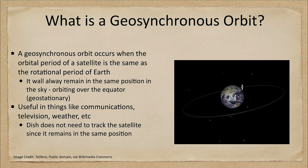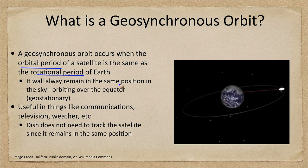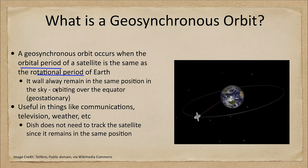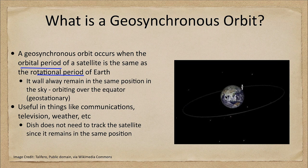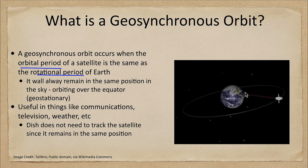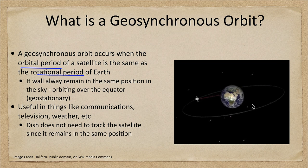This occurs when the orbital period of a satellite is the same as the rotational period of Earth. What that means is that it always keeps over the same spot on Earth. You can see the red line here as it goes through — it's staying over this exact same point as it orbits. So exactly as fast as Earth spins, the satellite orbits around.